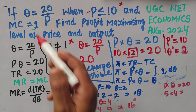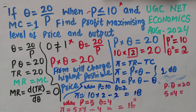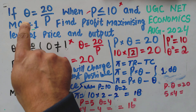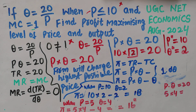This is actually a rectangular hyperbola demand function. An important property of this function is that we have a unitary elastic demand — the price elasticity of demand equals 1 at any point on the curve, irrespective of the price or corresponding output, because it is a rectangular hyperbolic demand function.